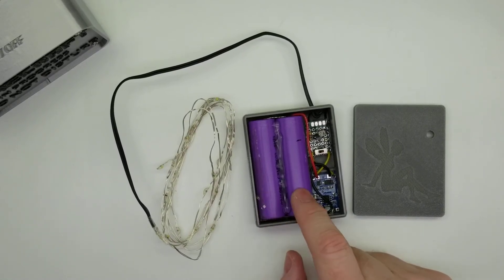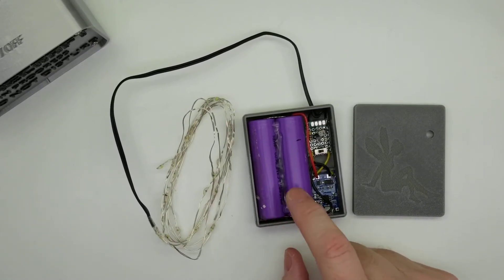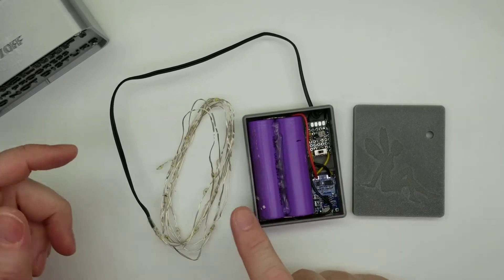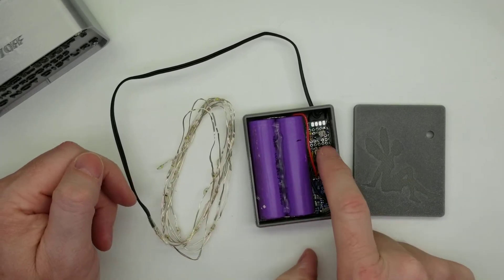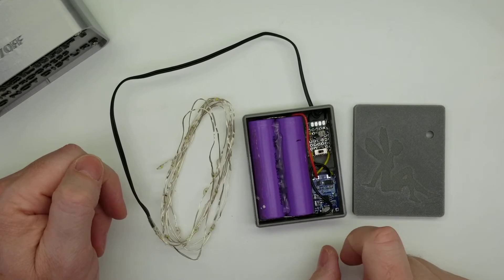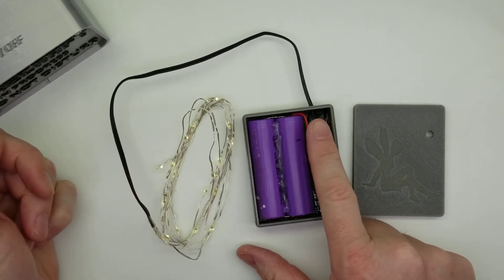Here's the fairy light modification. I've got two rechargeable cells, this is about three amp hours, I've got the fairy lights, a little charge board, a little custom circuit board that I designed here with a light sensor so it turns